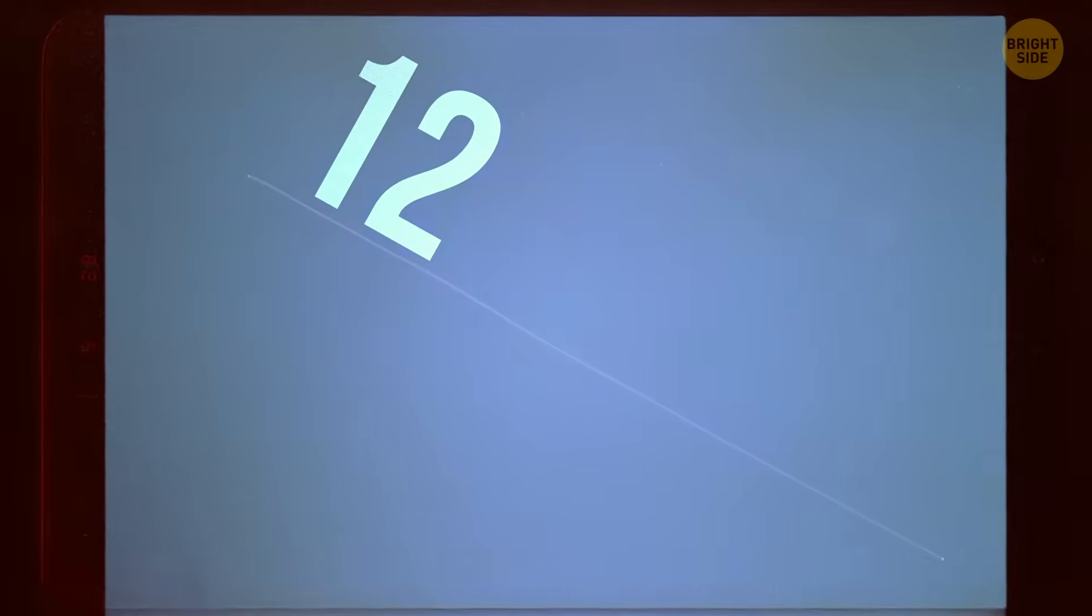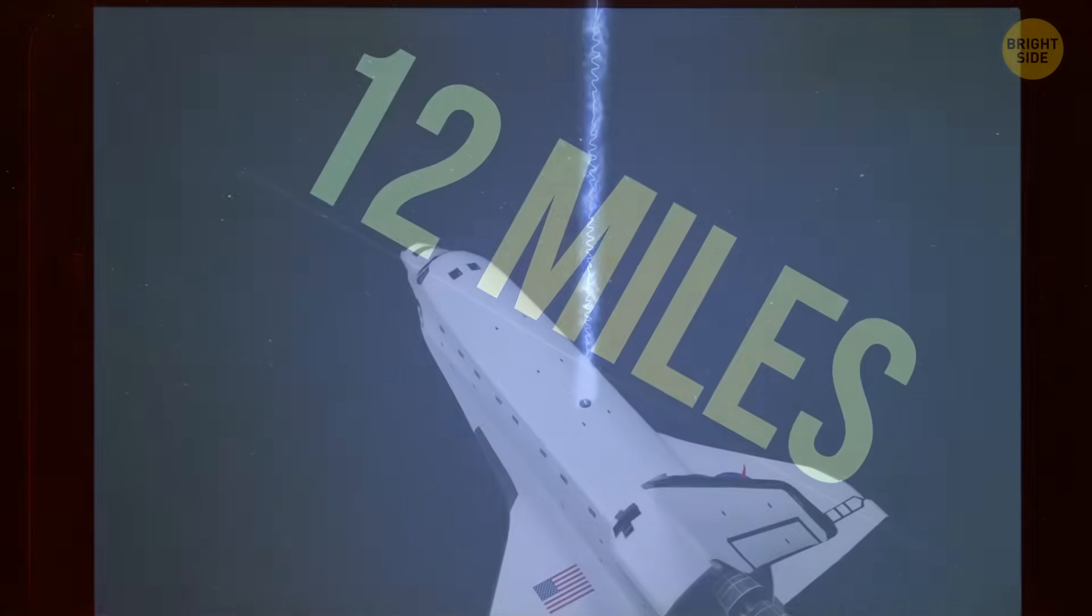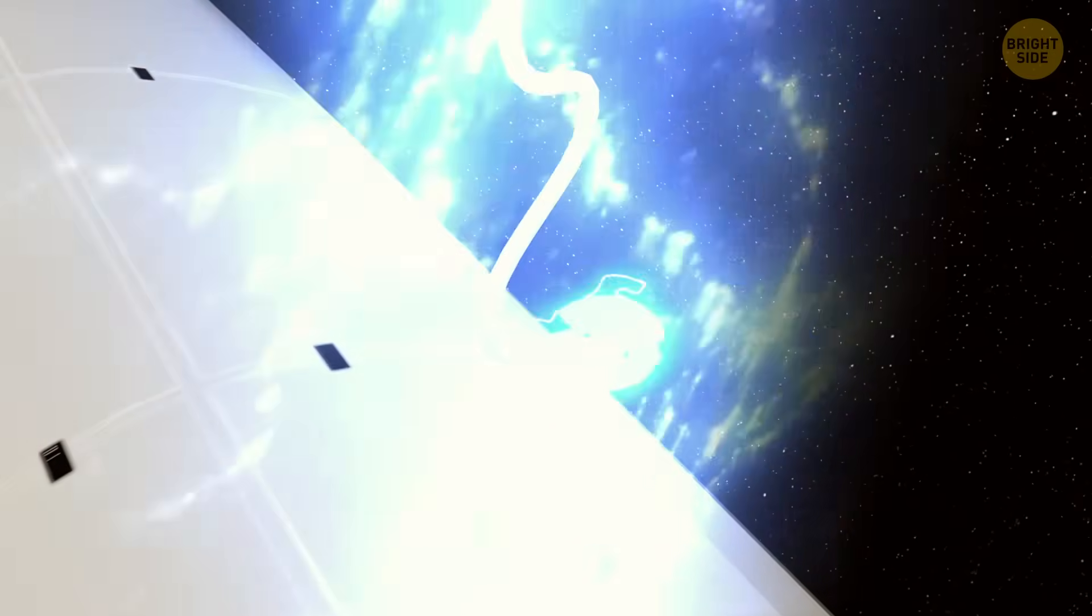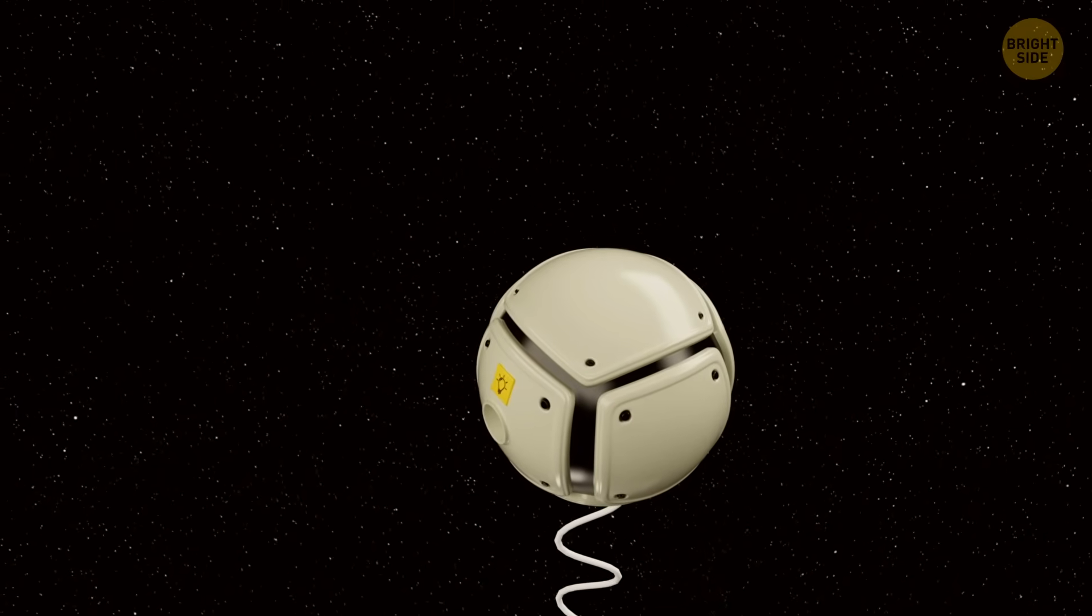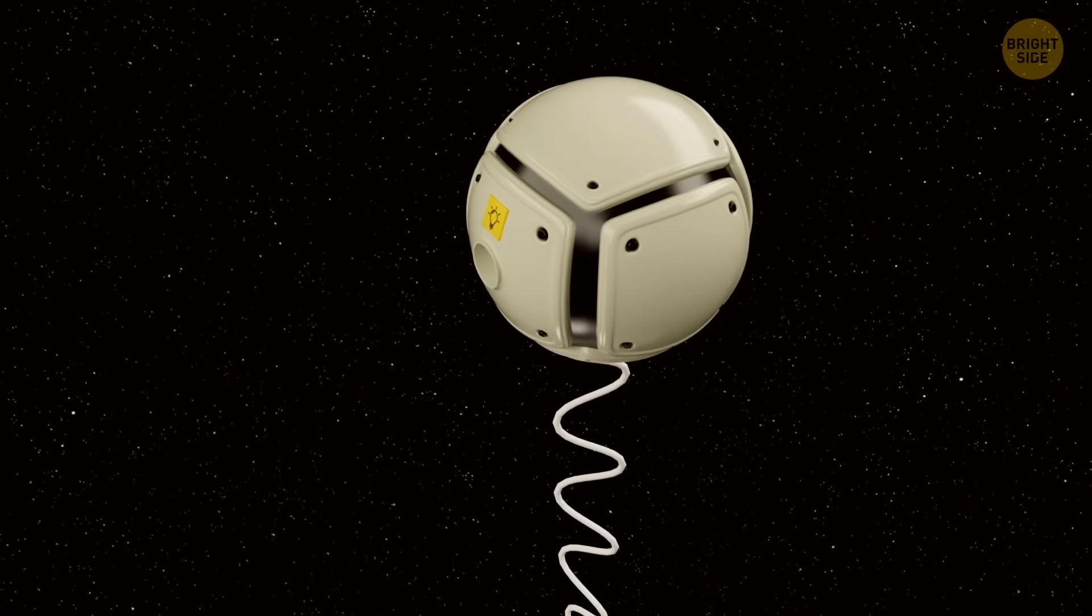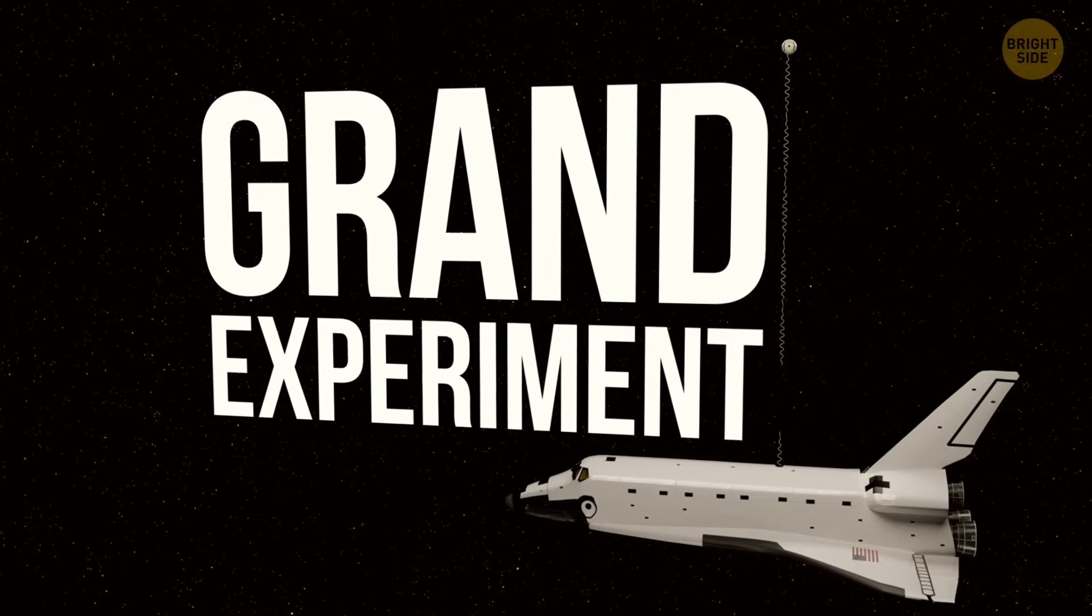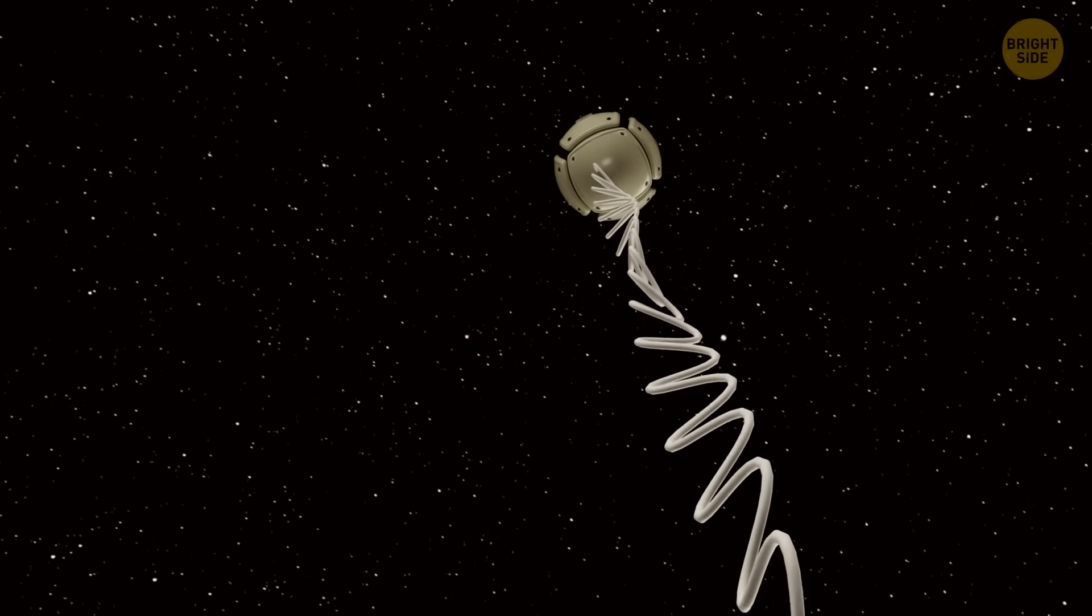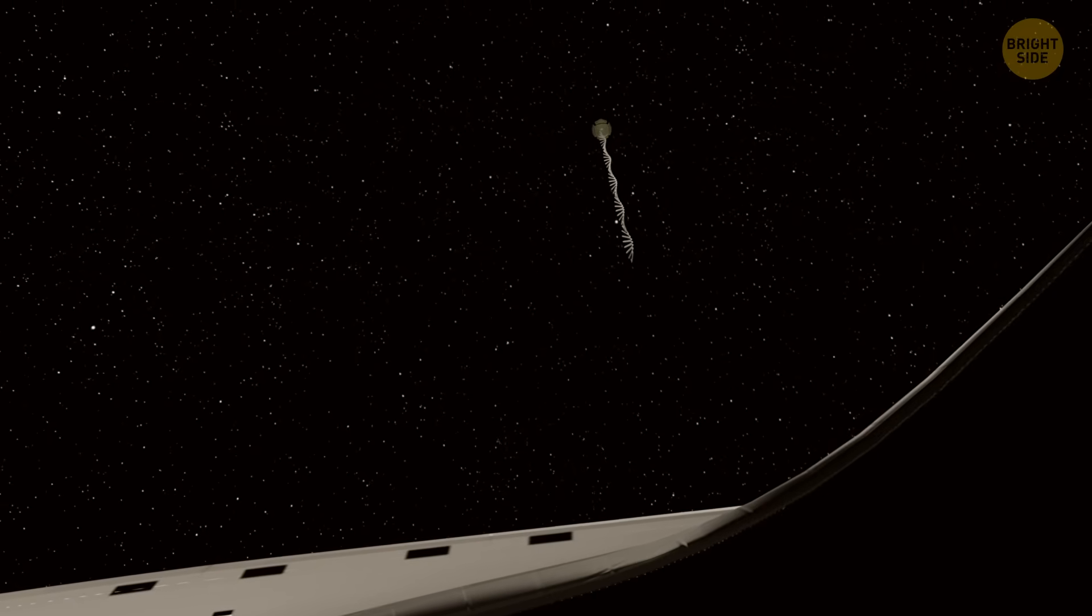And then, just as the tether was almost fully extended, nearly the full 12 miles, things took a dramatic turn. A localized electrical discharge zapped through the tether's insulation. The cable arced and burned a hole right through itself. And with one fatal snap, the tether broke. Just like that, the grand experiment was toast. The crew could only watch as the little satellite, still trailing its dangling wire, floated off into space like a lost balloon on the world's longest string.